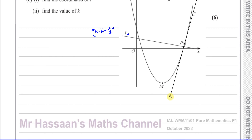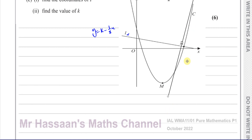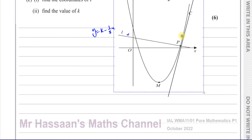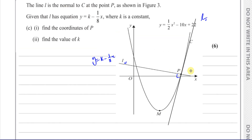The normal is at a right angle to the tangent. It doesn't look like it the way I've drawn it — the diagram is not to scale — but just imagine there's a right angle here. The gradient of the normal and the gradient of the tangent are perpendicular to each other.